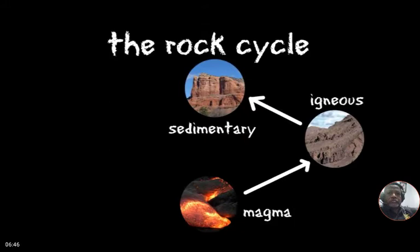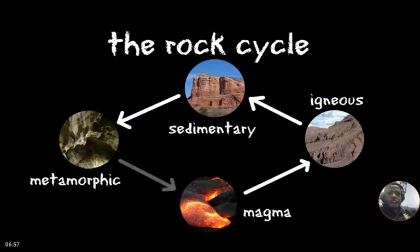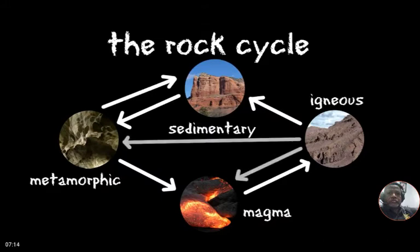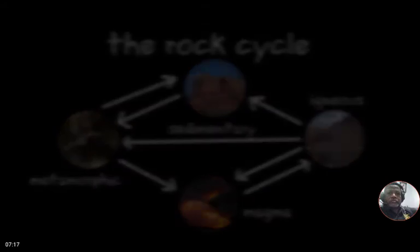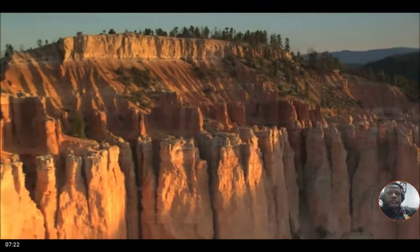Some sedimentary rocks are pushed below the surface due to tectonic activity, where they are exposed to heat and pressure, transforming them into metamorphic rocks. If rocks are buried even deeper, they may melt and form magma, starting the cycle all over again. Sedimentary and metamorphic rocks can also be eroded into sediment, and igneous rock can become metamorphic rock or lava — one way or another, rocks keep changing from one form to the next.